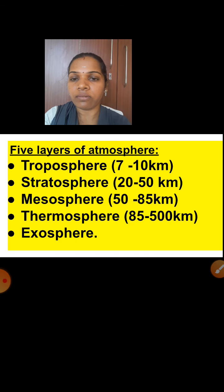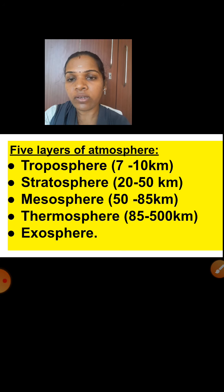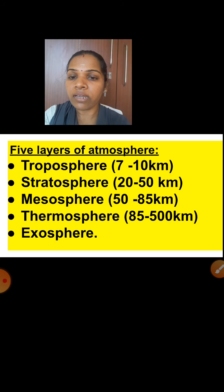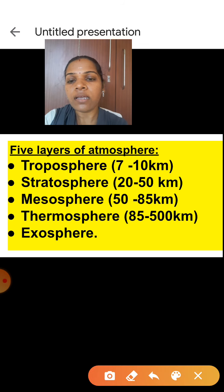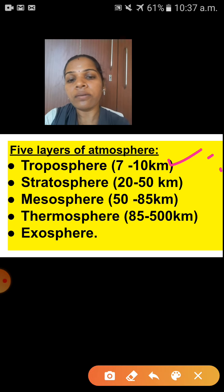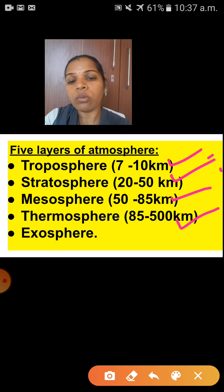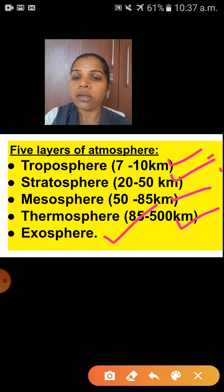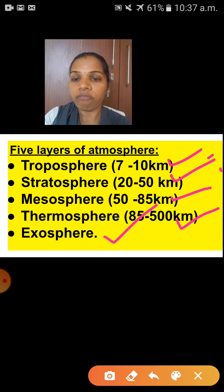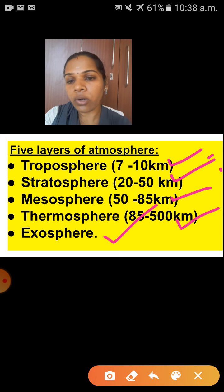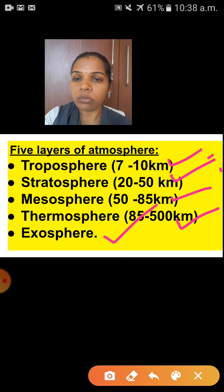Now, the five layers of atmosphere. Earth's atmosphere is divided into five layers — this you had already studied in fifth standard. The five layers are: first, the troposphere; next, the stratosphere; then the mesosphere; thermosphere; and finally the exosphere. See the distance in kilometers for each layer here.